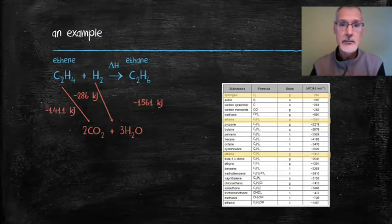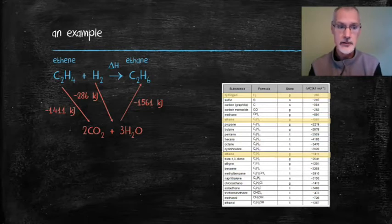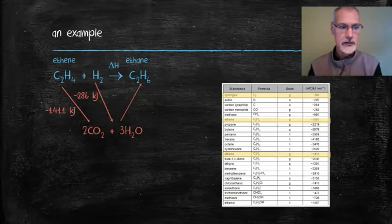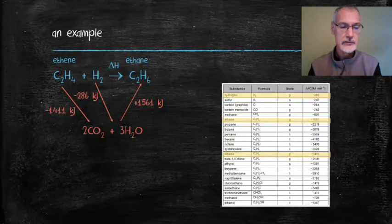If I do that, I must also flip the heat term. What was once an exothermic reaction now becomes an endothermic reaction or positive 1561 kilojoules. Now my cycle is complete. So I can take the blue heat and that must equal the sum of the individual steps of the reaction to arrive there.